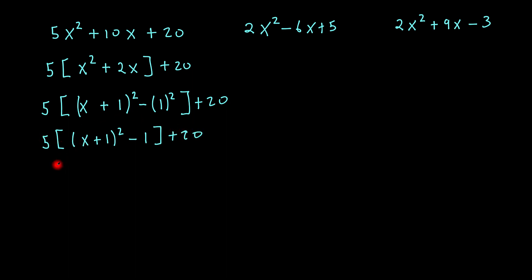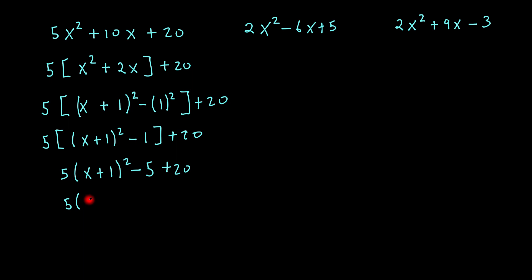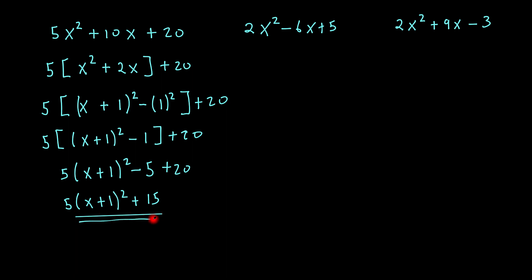So then that would give me — I take 5, that would be x plus 1 all squared, and of course that's minus 1, plus 20. Now what I do is bring the 5 in, remove these square brackets. So that will give me 5 times x plus 1 all squared, 5 times minus 1 will give me minus 5, plus 20. So the final answer will be 5 times x plus 1 all squared plus 15. And that would be my final answer.